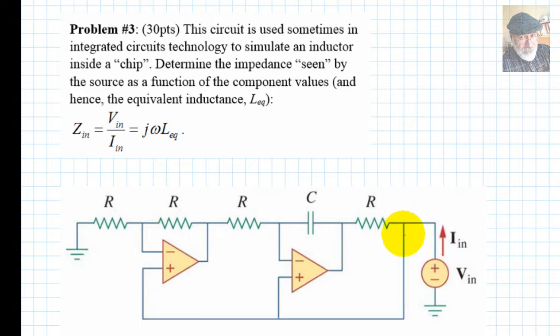So if you compute that the ratio between Vin and Iin is the impedance seen by the source, that will be equal to jω Leq, some Leq, and you need to compute Leq.